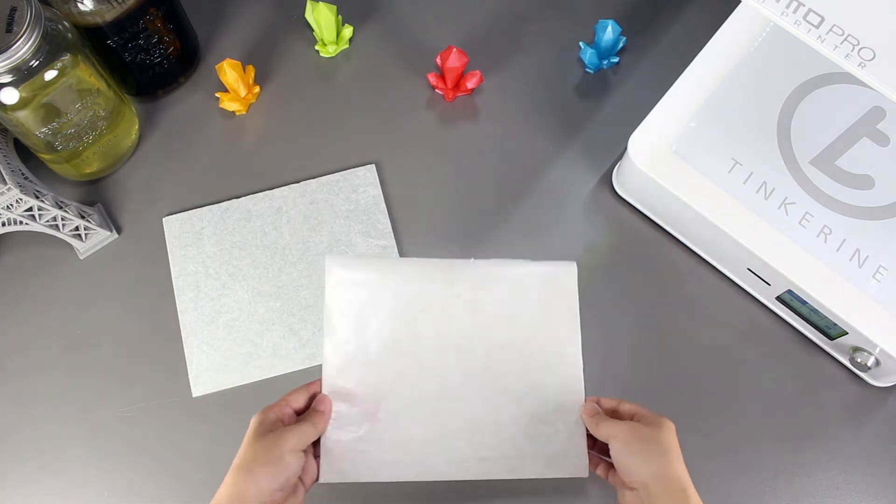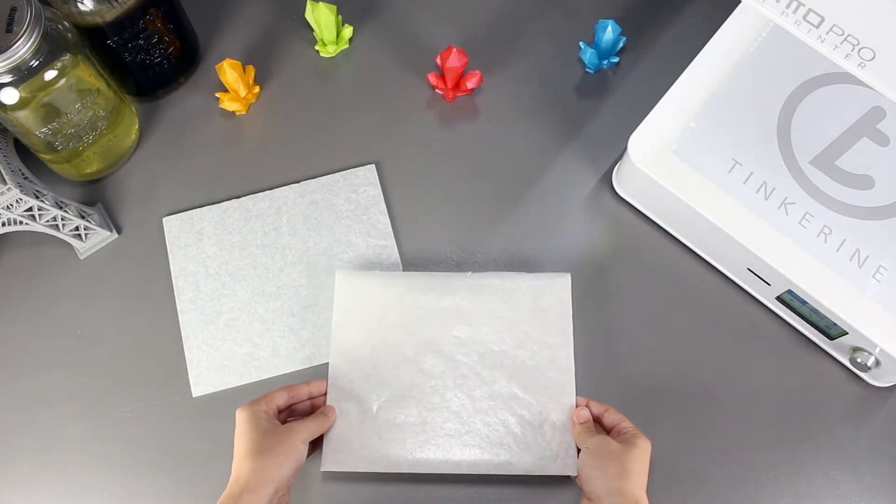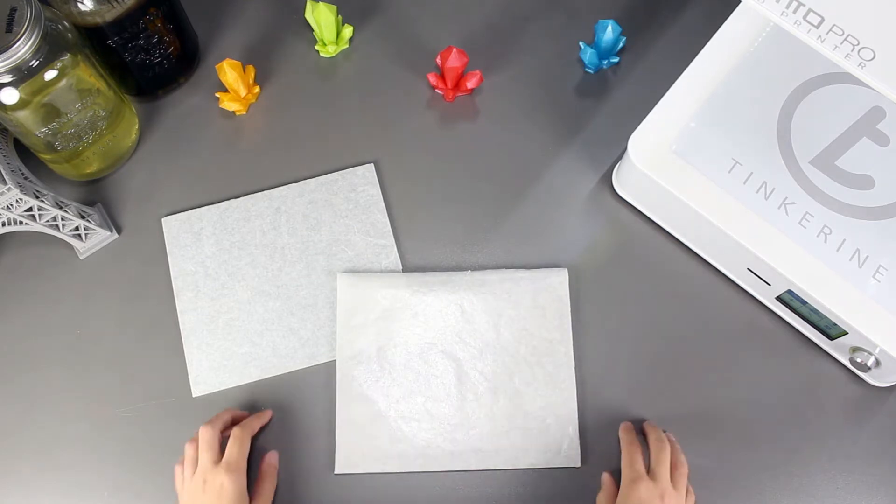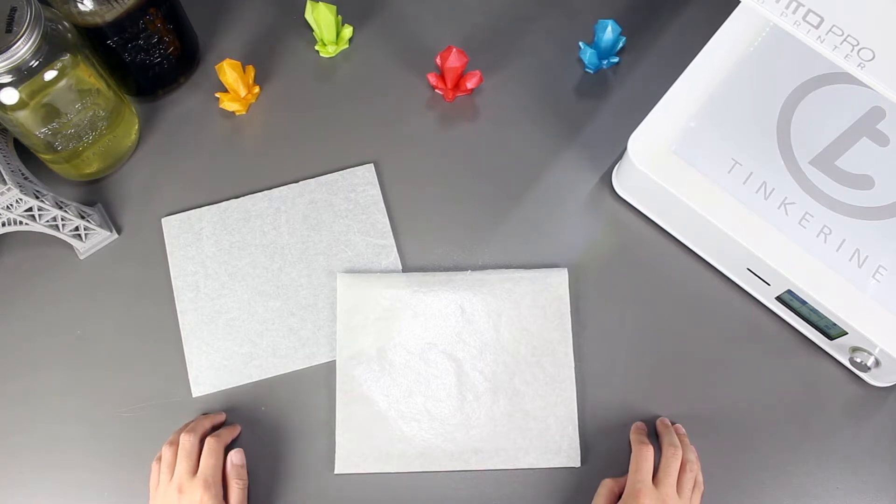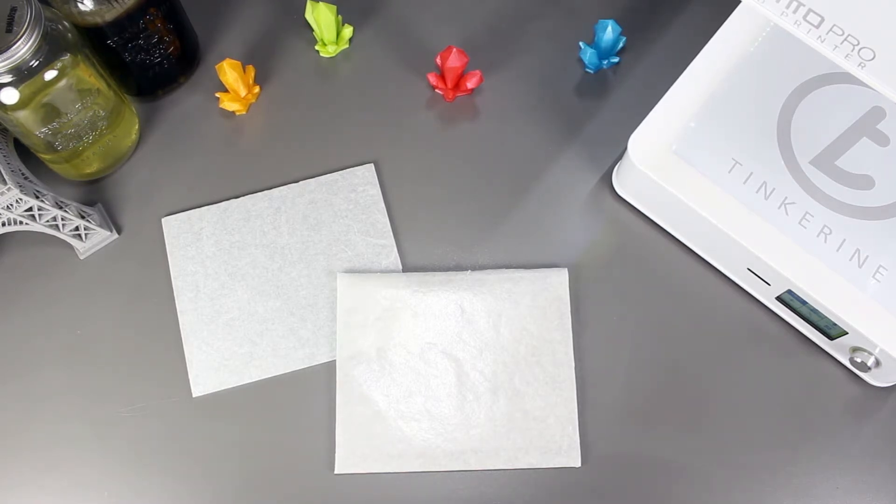Welcome to another episode of Tinkering Experiments. Today we are going to try and use vinyl transfer tape as a bed adhesive. It was suggested by one of our viewers, Andy Perry, who said that this method is a very good alternative. So here we are testing it out for everyone.